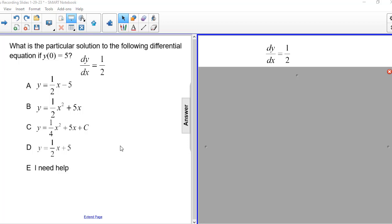What is the particular solution to the following differential equation if y of 0 is equal to 5? The particular differential equation we're looking at is dy/dx is equal to 1 half.